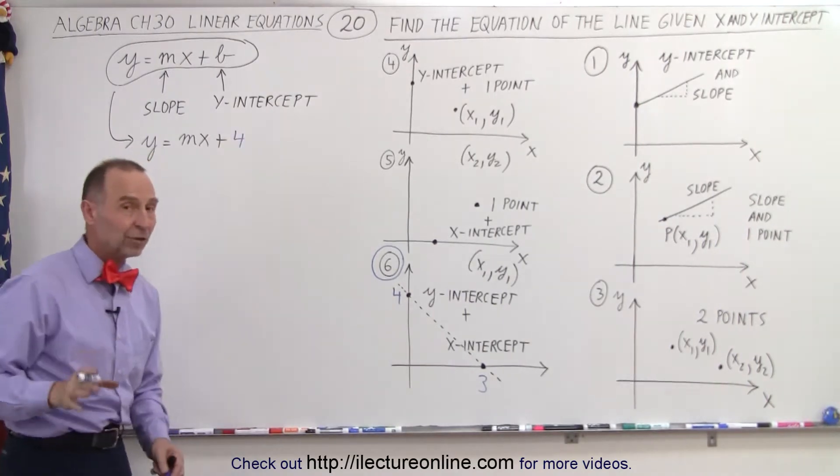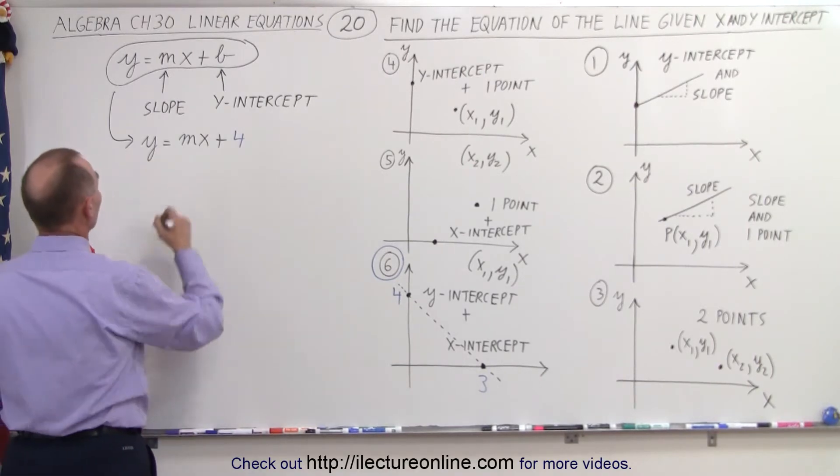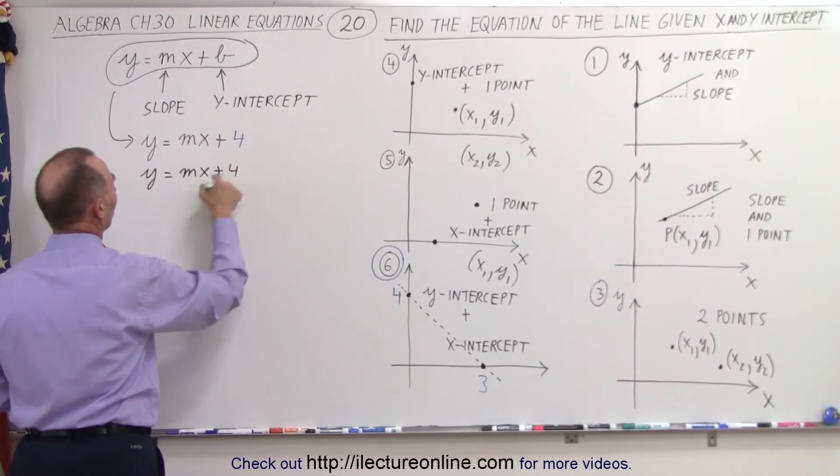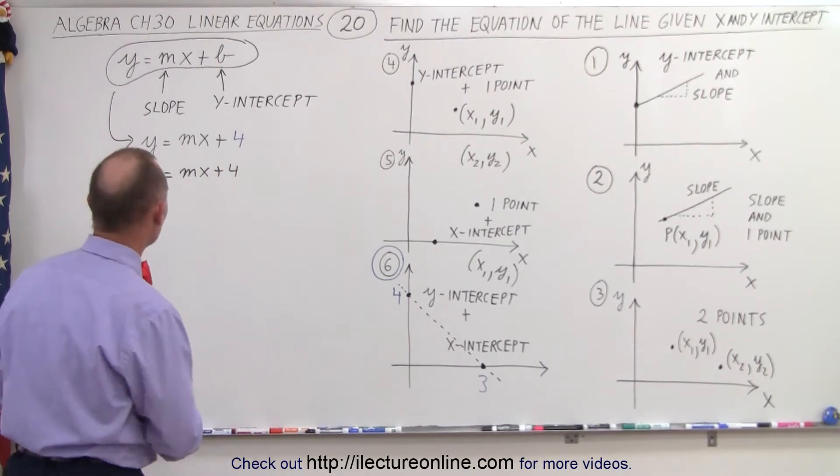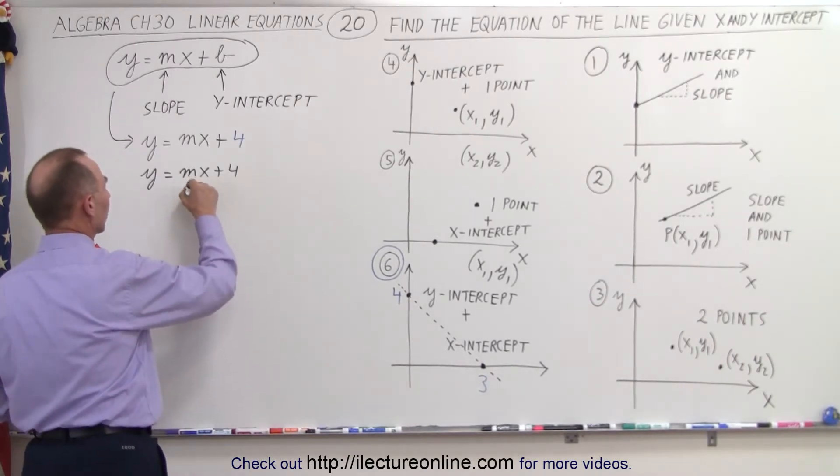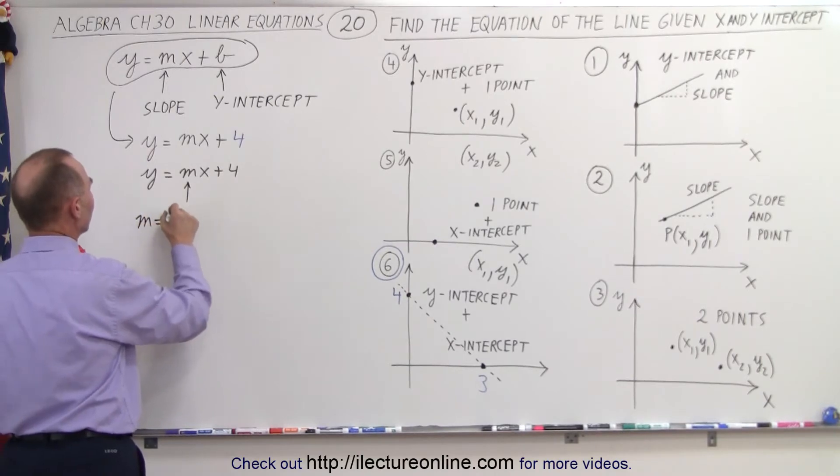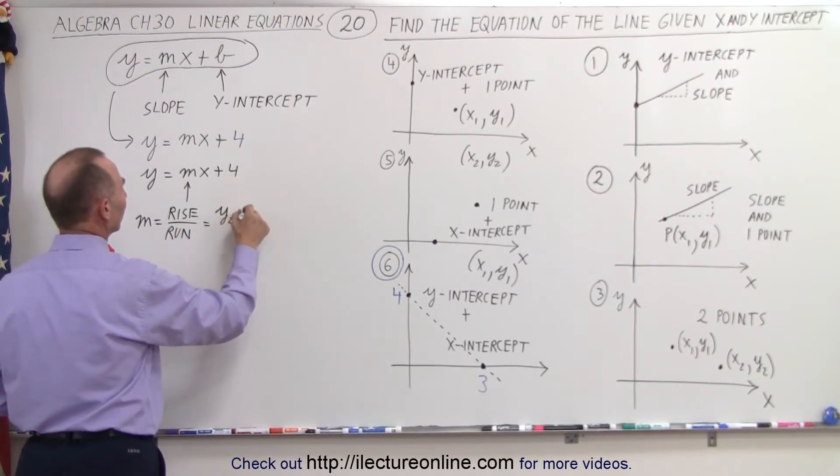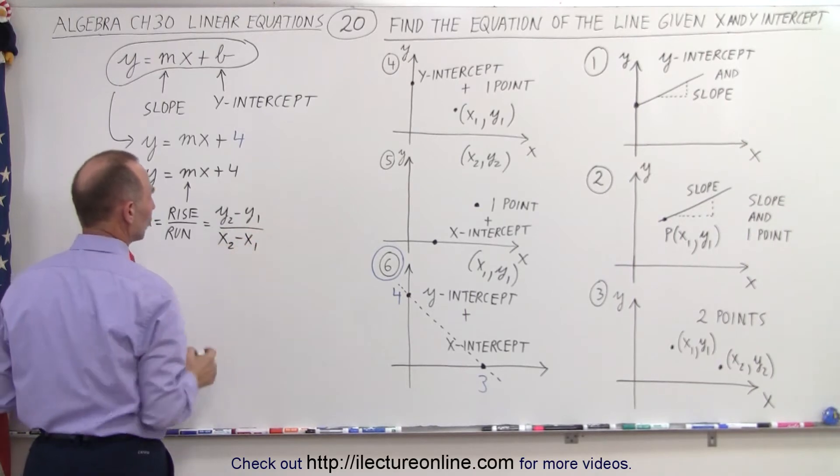And all we have left to do now is to find the slope. So we have y equals mx plus 4. Now, in order to find the rest of the equation, we need to find the value for the slope. So we're going to do the same thing before. We're going to define the slope, m, as being the ratio of the rise over the run, which means it's going to be equal to the difference of the y-value in the two points divided by the difference in the x-values of the two points.